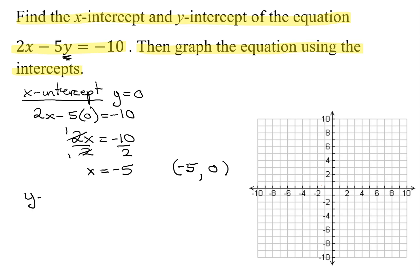Now let's find the y-intercept. And we do that by setting x equal to 0. In the original equation, I'm going to get 2 times 0, which is the x value, minus 5y equals negative 10.